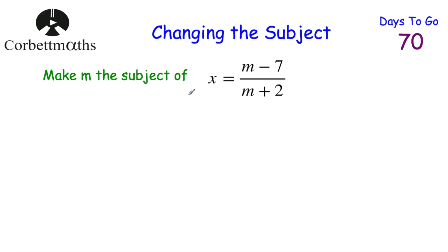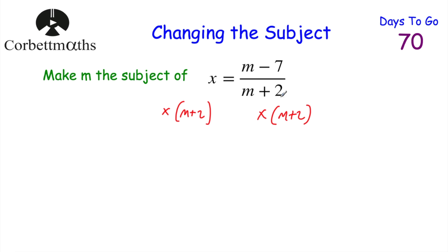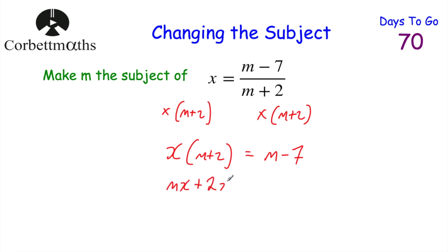Let's look at one last question: make M the subject of X = (M − 7) / (M + 2). Feel free to pause and try this yourself. We have M in the denominator, so multiply both sides by (M + 2). The left-hand side becomes X(M + 2), and the right-hand side becomes M − 7. Expanding the brackets: XM + 2X = M − 7.